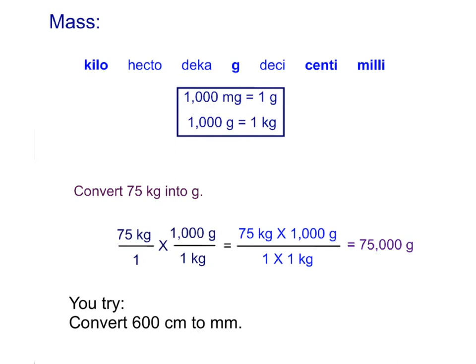Let's try using this method of dimensional analysis to look at a problem with mass. And when I have mass, here are all of my prefixes for mass. We know mass is in grams. I know that 1,000 milligrams is going to equal 1 gram. I know 1,000 grams equals 1 kilogram. I wrote those conversion factors right there for you.